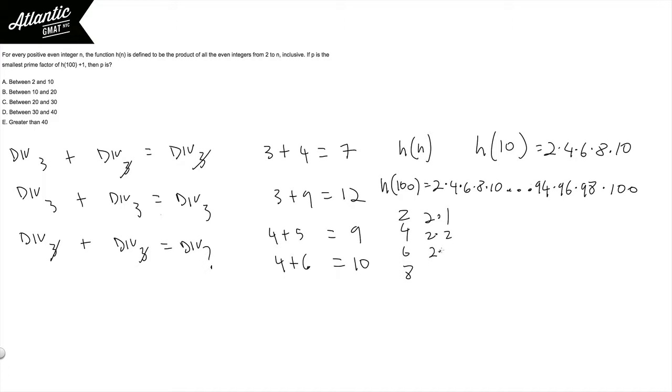With the last one being 2 times 50. So you should see now that your h of 100, which is 100 factorial but missing every other number, will actually have the consecutive integers from 1 to 50 as factors.